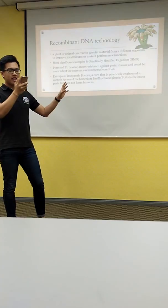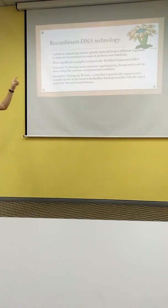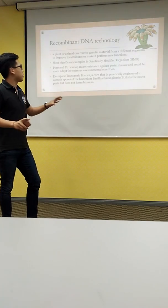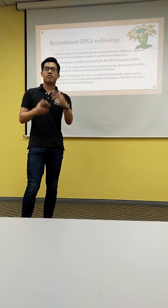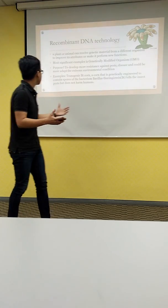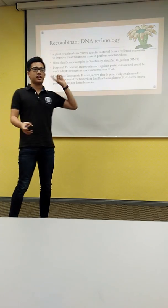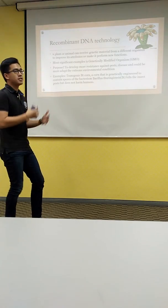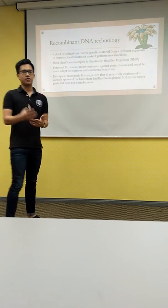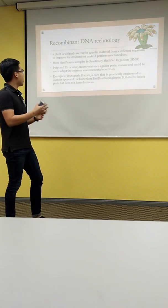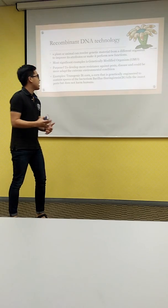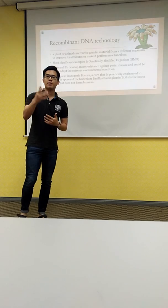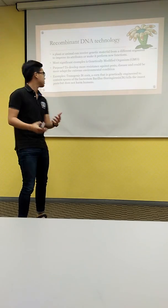For recombinant DNA technology, it is a technology in which a plant or animal can receive genetic material from a different organism to improve its attributes or to improve and perform more functions. The most significant example is genetically modified organisms, as I mentioned just now. So what is the purpose of this method, the recombinant DNA technology? The purpose is to develop more resistance against pests and diseases, so it could be more adapted to extreme environments and extreme climatic conditions.